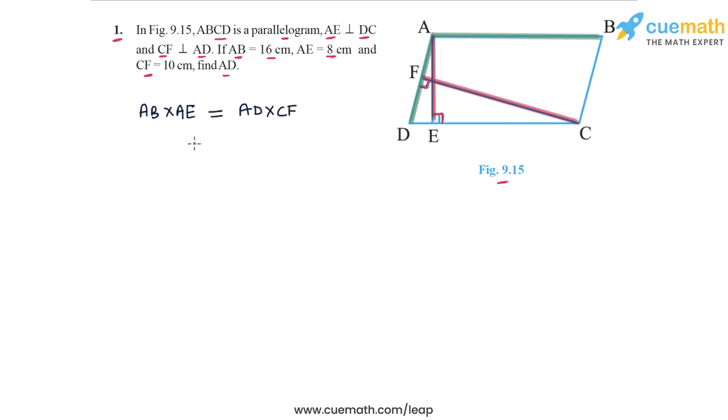And of course, both these products should be equal, since the area of the parallelogram is the same. So this is the key idea behind solving this problem, equating these two products. And now, we have the values of three of the four terms in this equation.